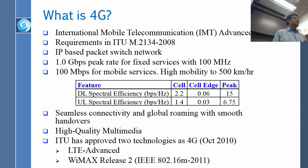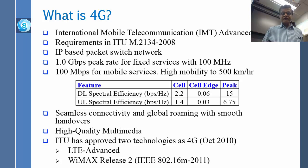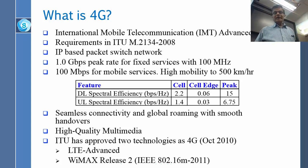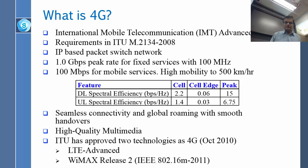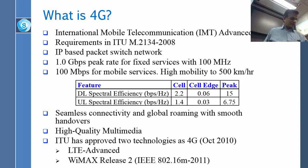LTE came into being in 2008, so before that they had already written the 4G specification. The 4G standard said it should be IP-based, with a 1 Gbps peak rate for fixed services using 100 MHz of spectrum, and 100 Mbps for mobile going at 500 kilometers per hour. They also specified spectral efficiency — inside the cell you get 2.2 bits per hertz, and at the edge you might get 0.6.